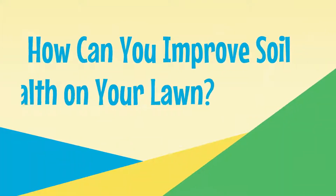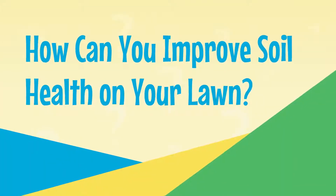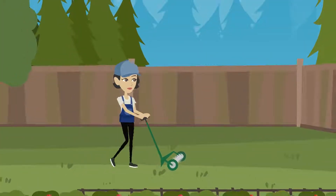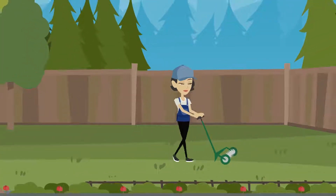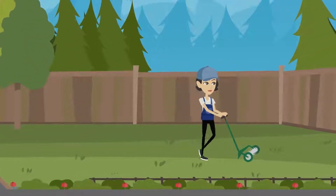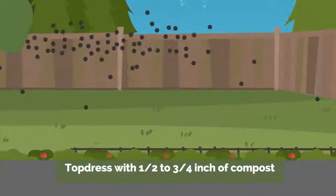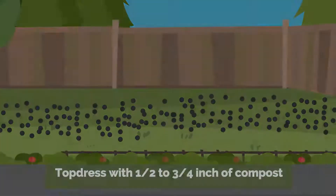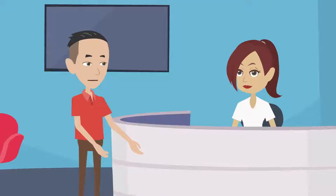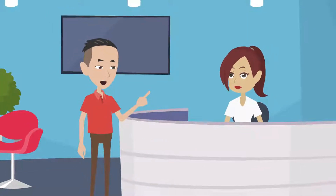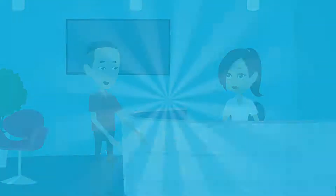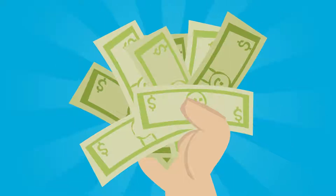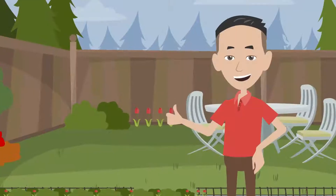How can you improve soil health on your lawn? To improve soil health of existing lawns, aerate as deep as possible in the spring or fall, then top dress with half to three-quarter inch of compost. Contact your community or soil and water conservation district to find out if cost share funds are available for soil quality restoration on your lawn.